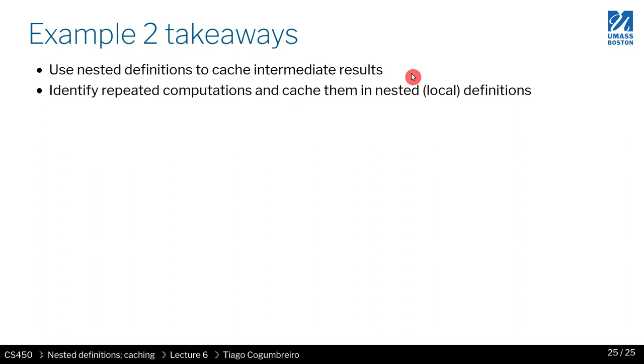So we saw that we can use a nested definition to cache intermediate results. This helps not just in terms of performance but it might also help us understand a bit better what's going on in terms of the code. And another thing we noticed was that we found a way of identifying repeated computation and cache them in this local definition. And that is it, I hope you had fun.